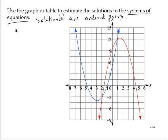Now, since we have a graph, the solutions are found by looking for points of intersection. So looking at this graph, I see two points of intersection.